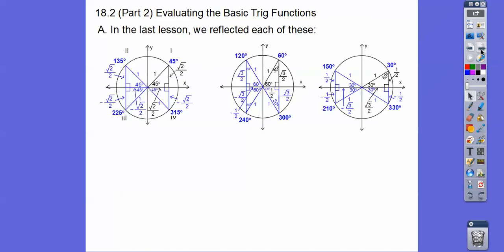In the last lesson, we reflected on these triangles — this 45-45-90 triangle. We reflected it over there, down there, and then back over there, and it gave us these angles: 145, 135, 225, 315. Then we threw a 30-60-90 triangle in there and reflected it, and it gave us these angles: 60, then 60 up from 180 is 120, 240, and 300.